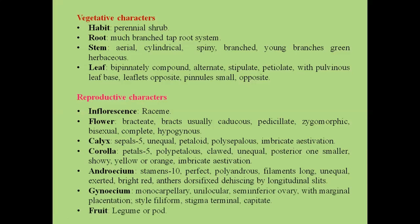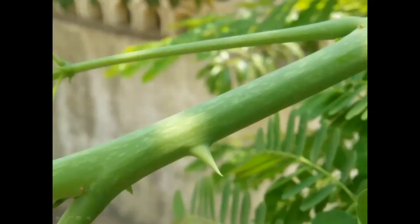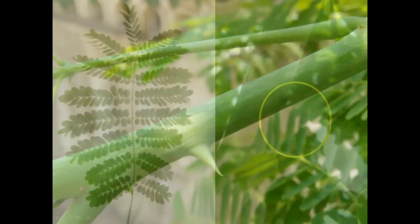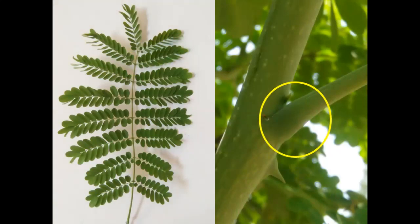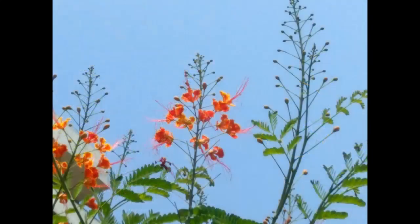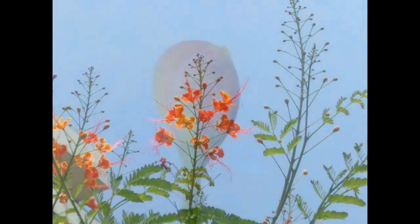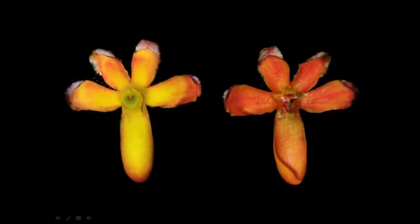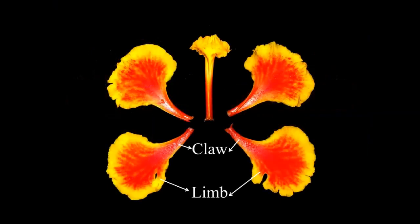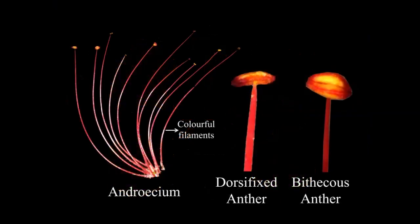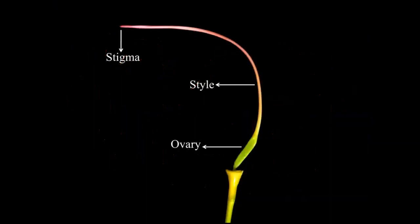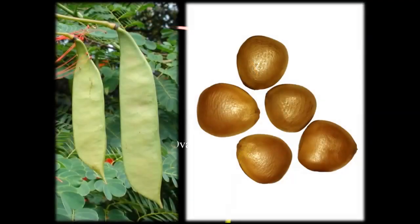Fruit type is legume or pod. You will find spines on the stem. This is the bipinnately compound leaf with pulvinate leaf base. This is raceme inflorescence. This is a bud. This is an opened flower. This is the outer and inner calyx. These are the petals. This is the androecium with colorful filaments and dorsifixed bithecous anthers. This is the gynoecium with stigma, style, and ovary. These are the fruits and seeds of the plant.